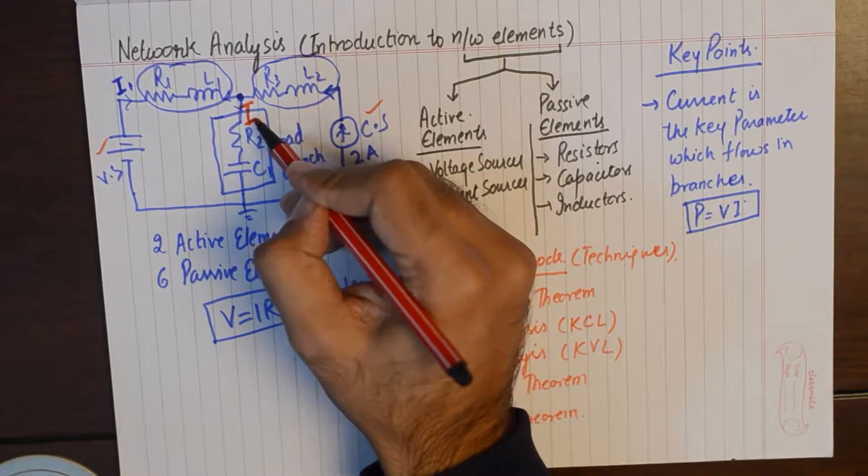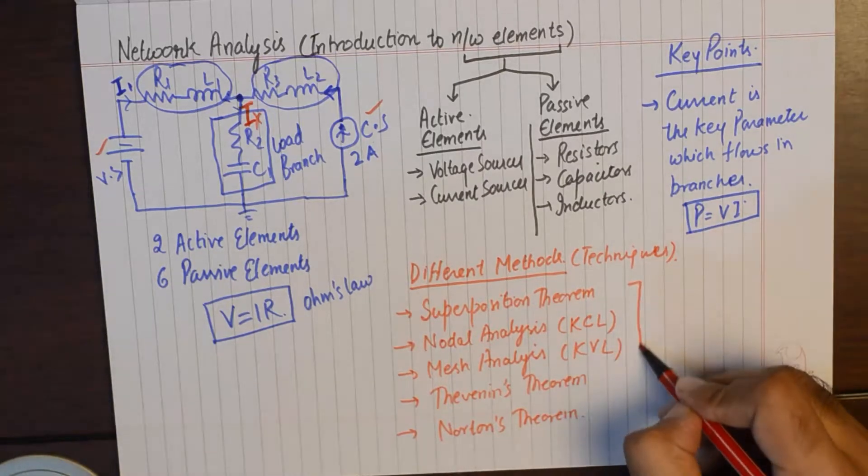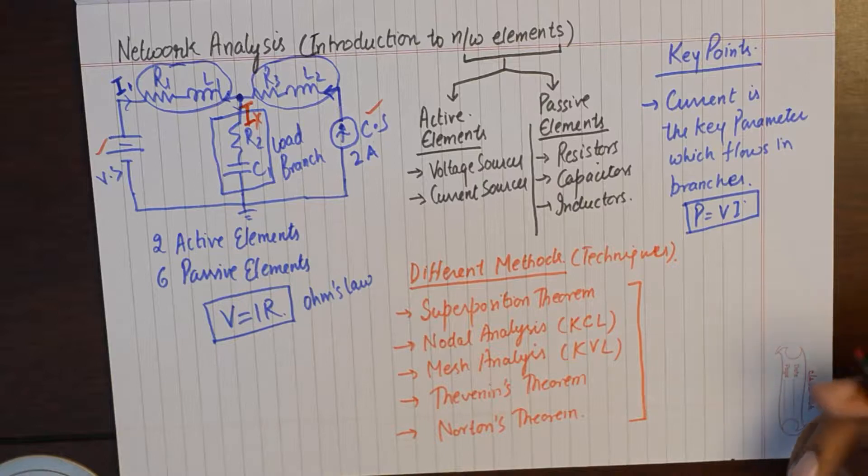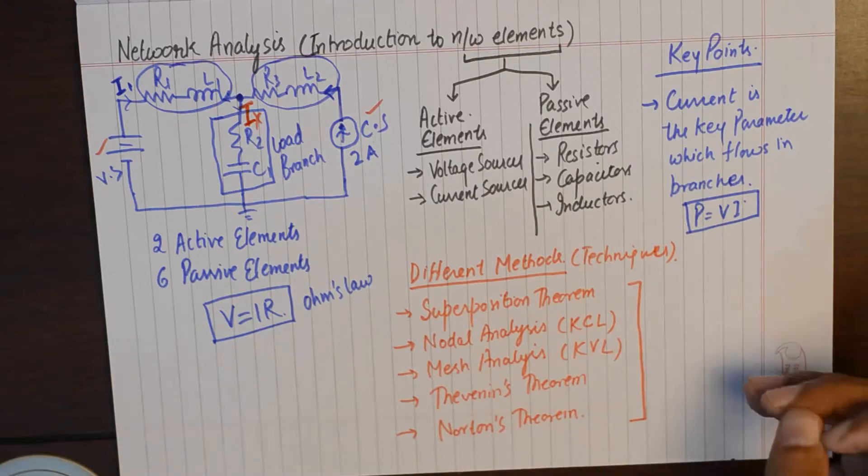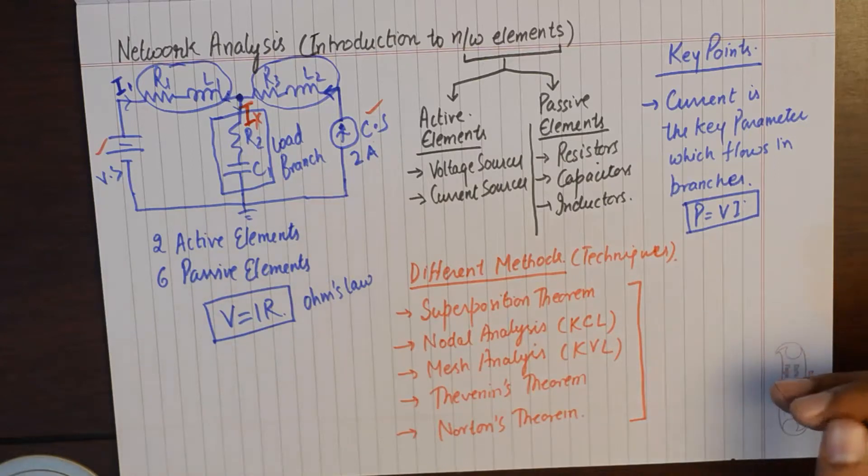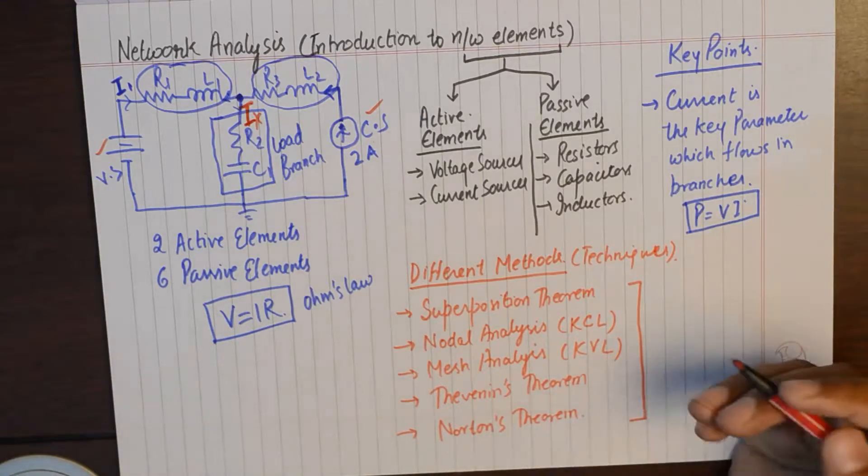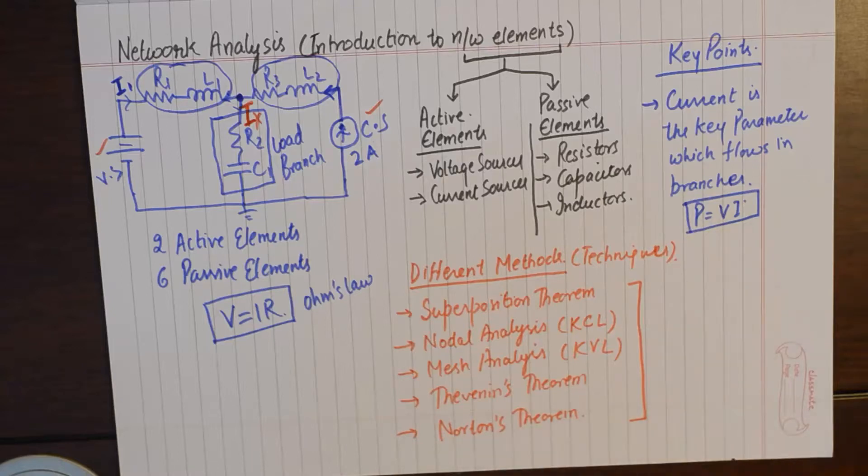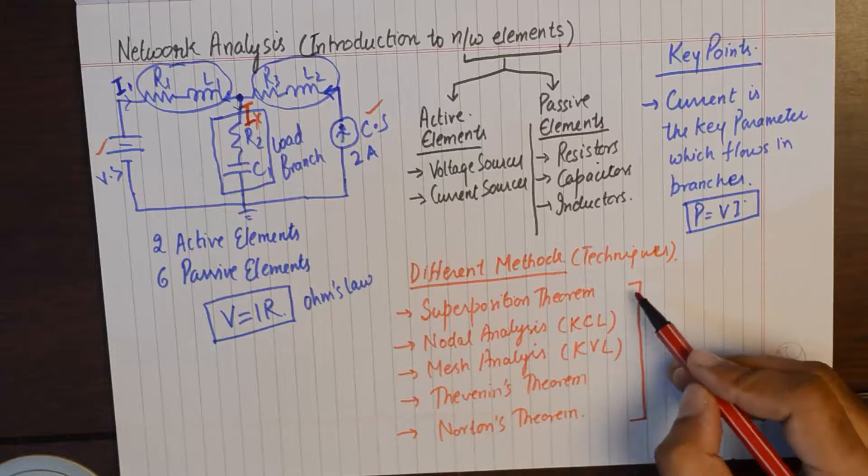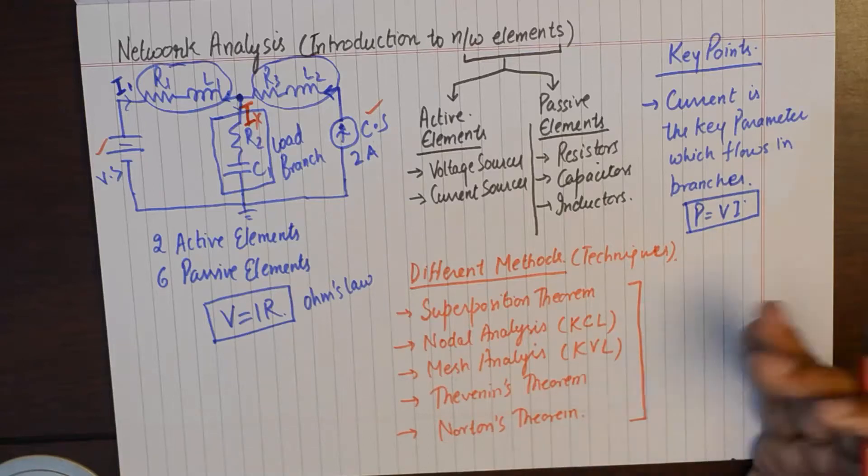Now if I were to calculate the current IX in the load branch for this particular network, network analysis gives me a provision to calculate it via five different methods. Now it's up to us to judge which method suits which network the best. And as we progress and as we practice analyzing the networks more and more, we become more aware of the application of these techniques in particular networks.